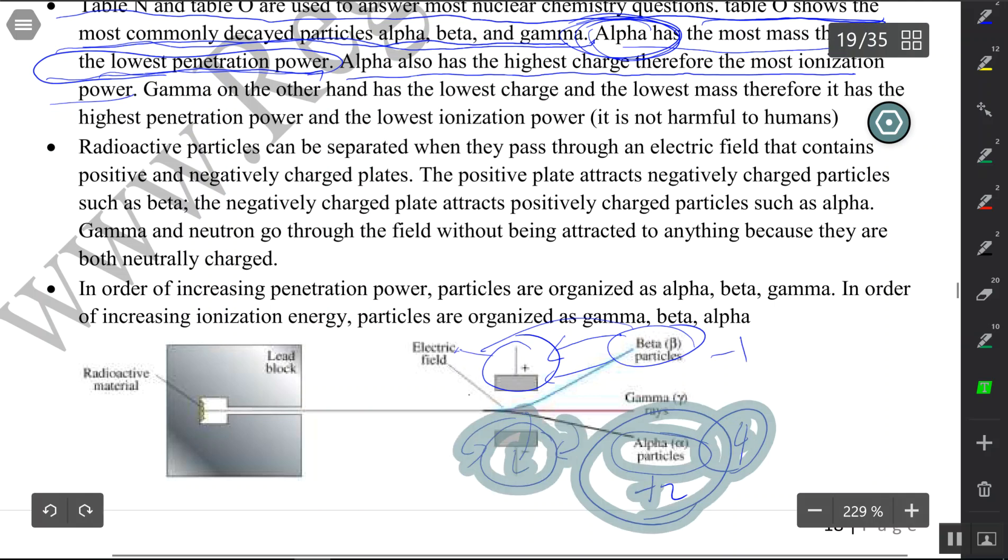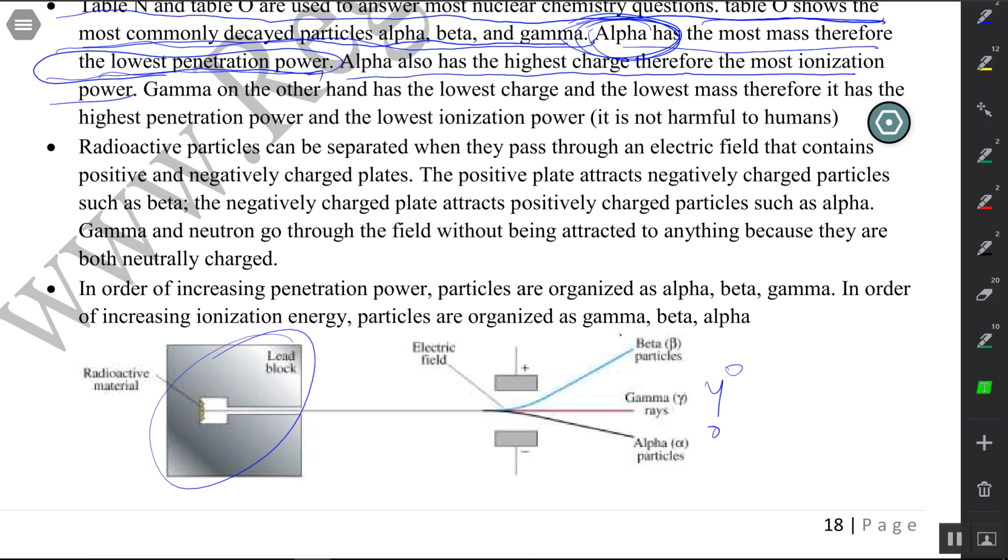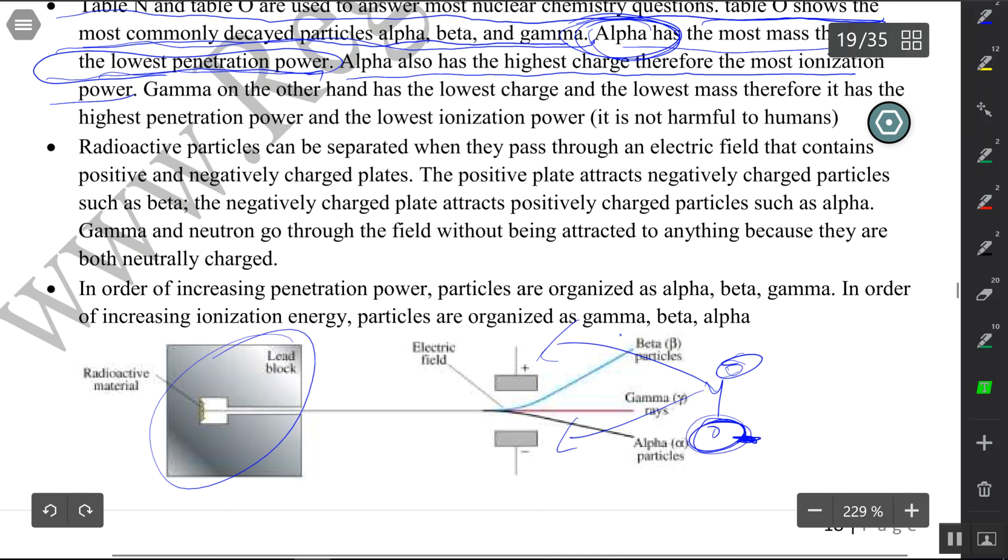Now on the other side of the spectrum, we could talk about gamma. Gamma has a charge of zero and a mass of zero. Gamma will go through pretty much anything - it could be stopped by a lead block, but gamma could go through a lot of things. But it cannot ionize. It cannot disturb a system that's at equilibrium. It cannot attach itself to a negative ion or a positive ion. The reason why is because it has a zero charge. The mass is zero, so it goes through everything, but it does not cause as much harm as alpha would.